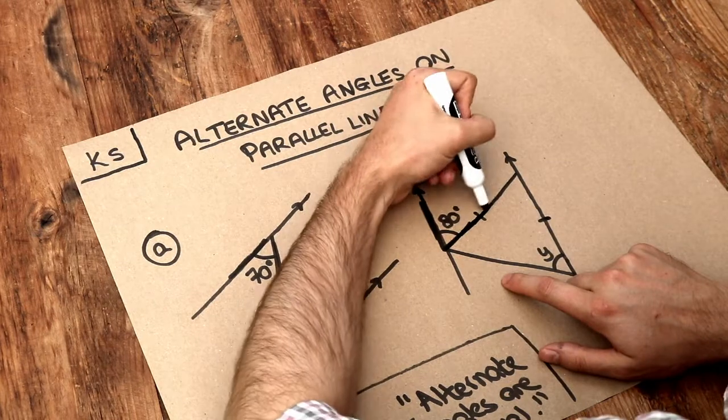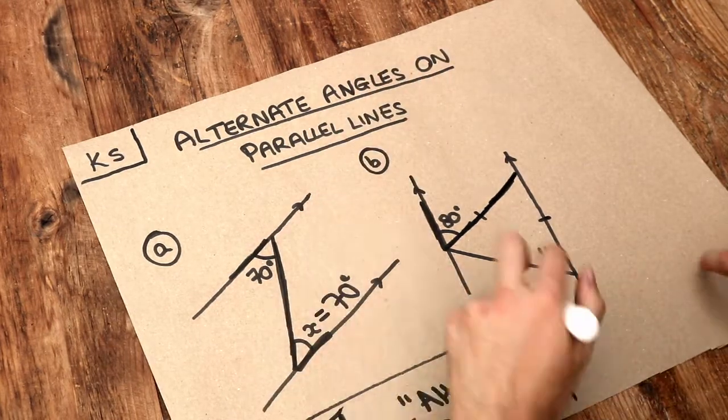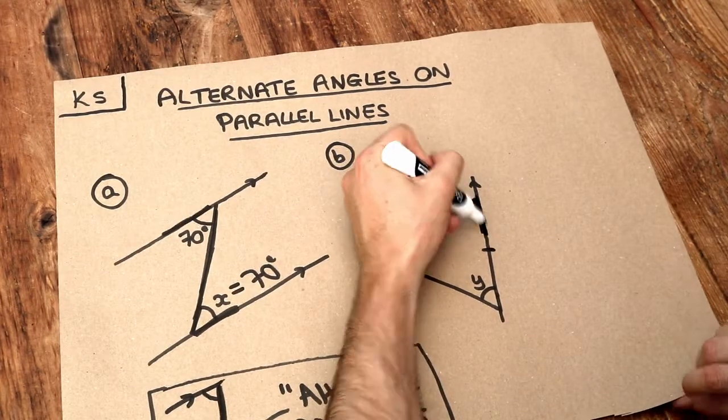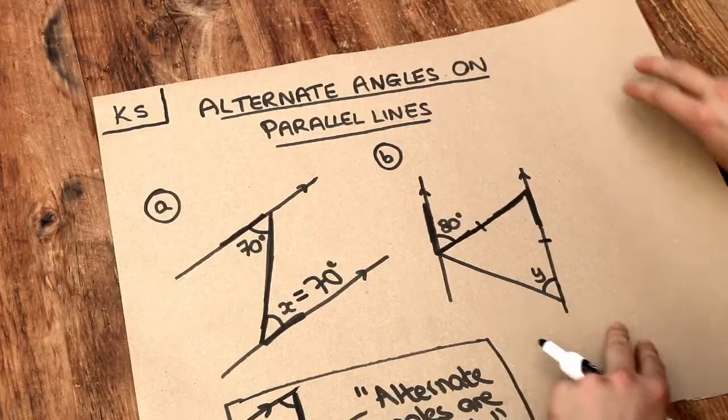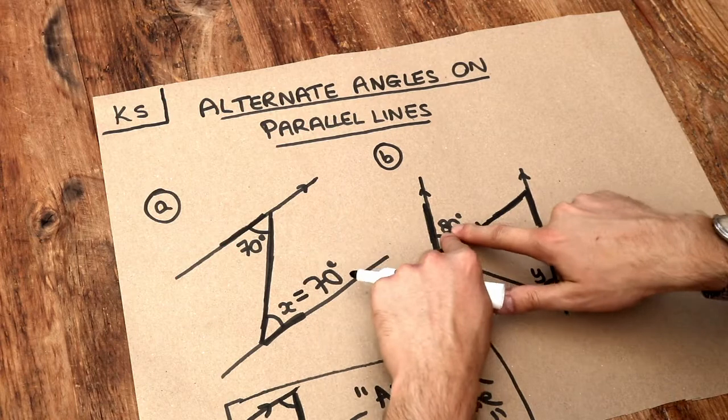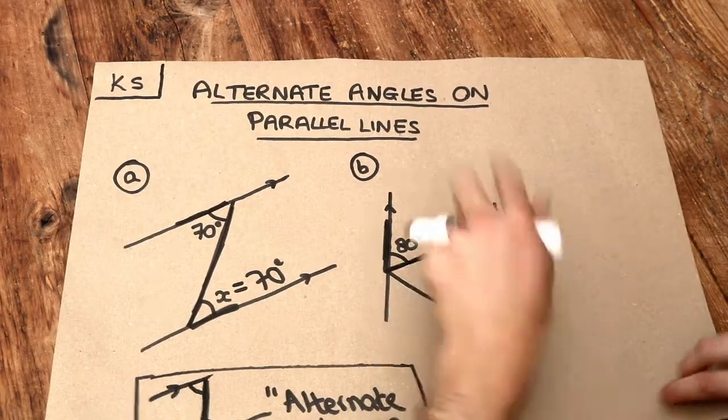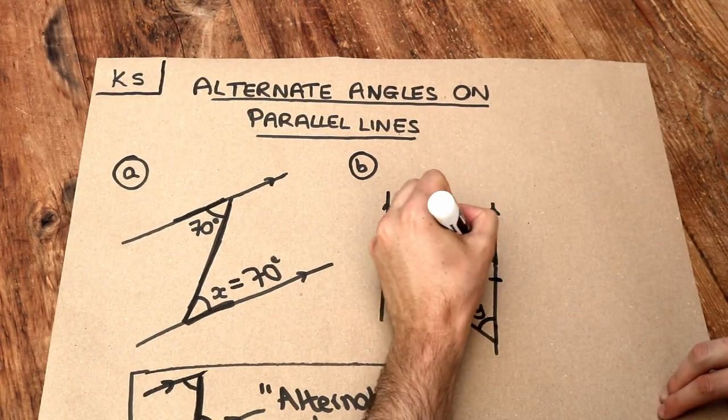So if we bold up the lines either side, and then we've got the parallel line on the other side of our Z, you can see that's kind of a backward Z. So if the angle between the first and second line is 80, the angle between the second and the third line must also be 80. So that is 80 degrees.